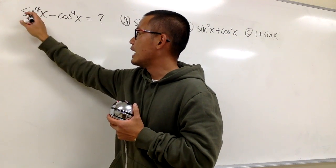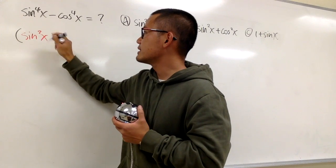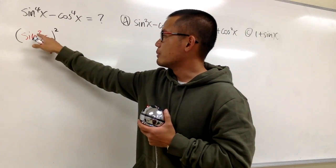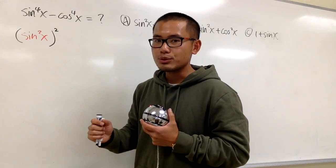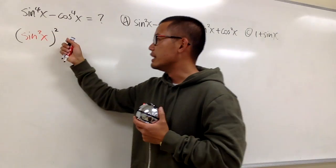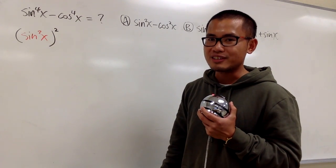For the sine to the fourth power x, I will have to write this as sine square x and then square like this. You see, we can multiply the powers and we can get the four back right here. And the reason I have to do this is because I need to look at this as a square and then minus b square, so I can use the difference of two squares formula to factor it out.